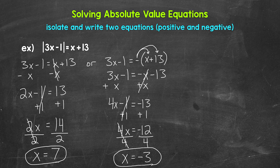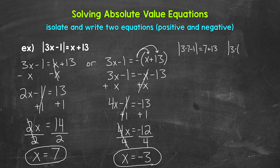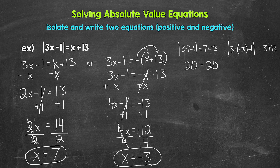Those are our two solutions: 7 and negative 3. Now let's check those solutions by plugging them back into the original equation. Plugging in 7: the absolute value of 3 times 7 minus 1 equals 7 plus 13. 3 times 7 is 21, minus 1 is 20. The absolute value of 20 is 20. On the right side, 7 plus 13 is 20. So we have 20 equals 20 — that is true. X equals 7 is correct.